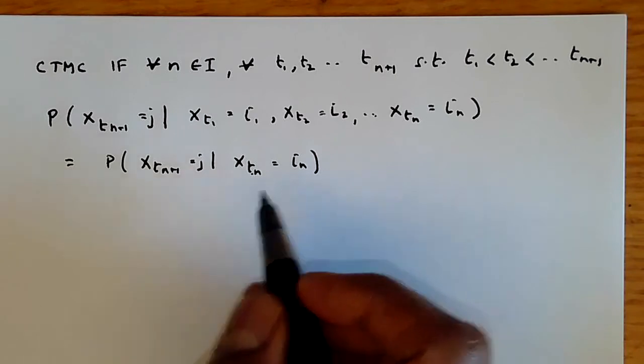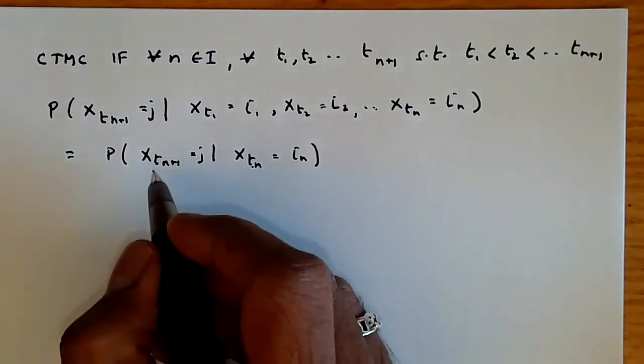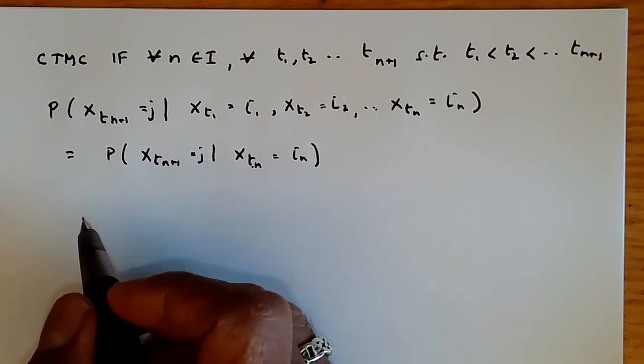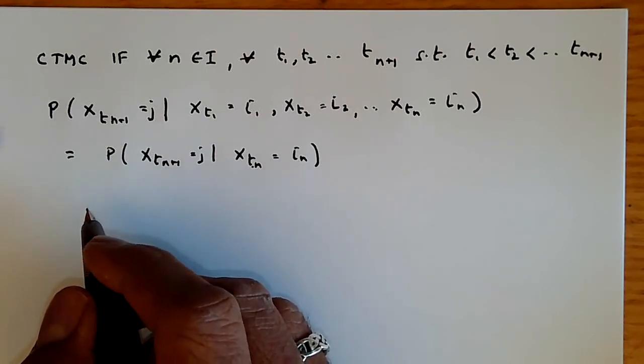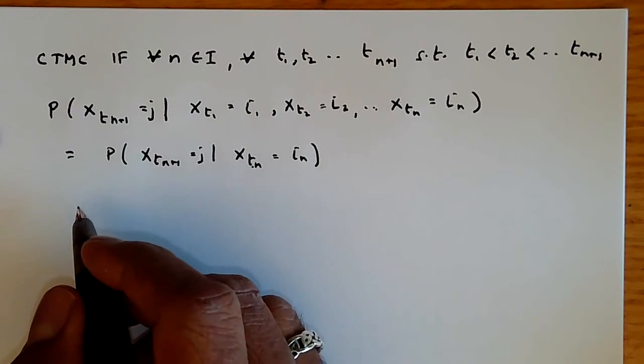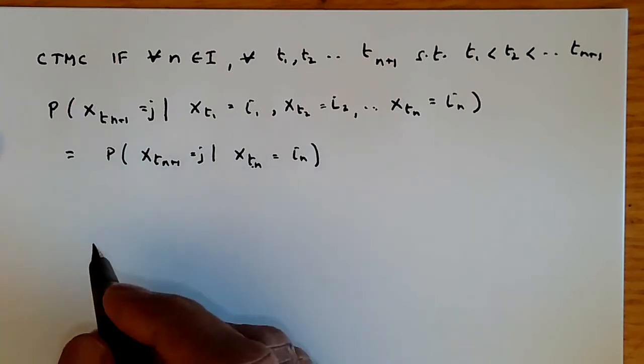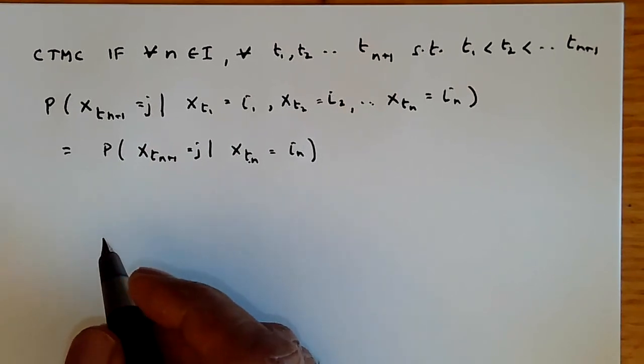So, given this kind of framework, the definitions of homogeneity, time homogeneity, irreducibility, recurrence, periodicity, ergodicity, which you described for discrete time Markov chains, continue to hold for continuous chains, but basically no change.